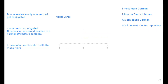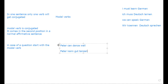Let's look at more examples. 'Computer kann gut tanzen' — the computer can dance well. This is also an affirmative sentence. The second verb 'tanzen' — dance — goes to the end of the sentence without being conjugated. It stays in its infinitive form. This is a very important concept that will help us make sentences.